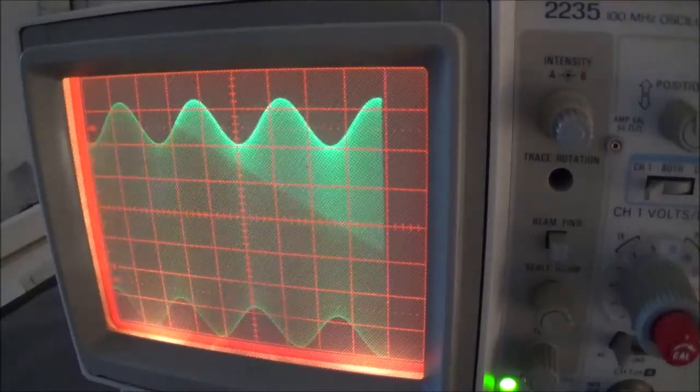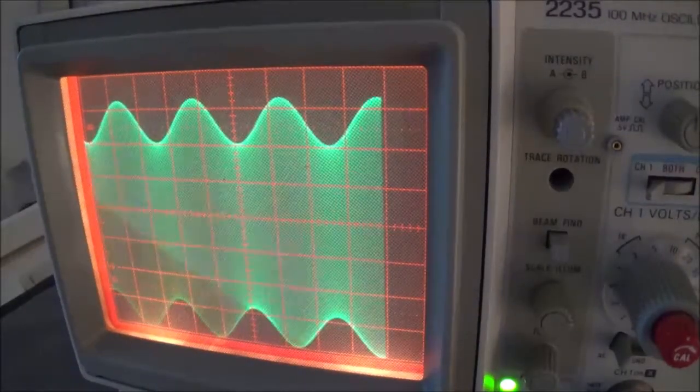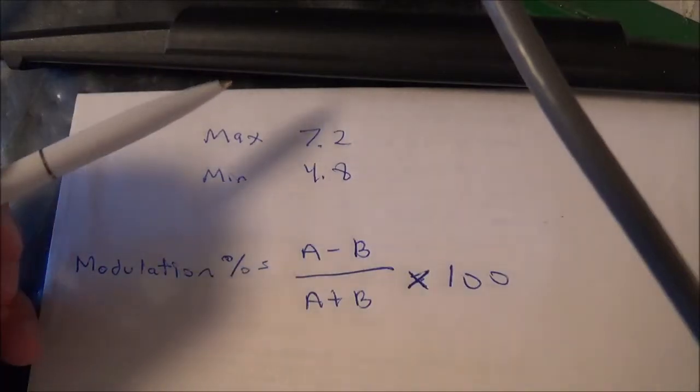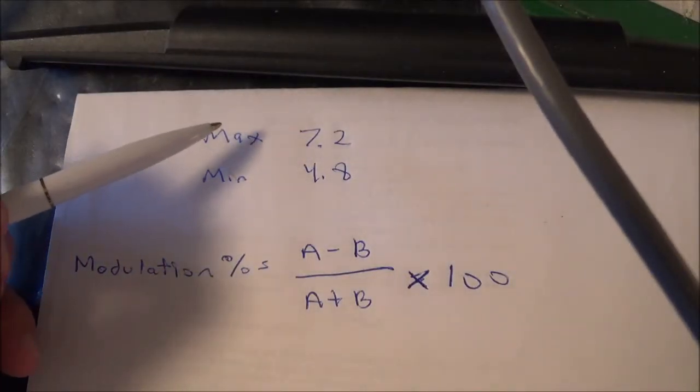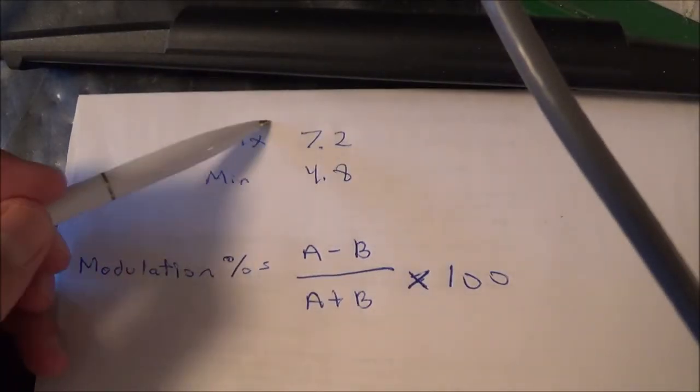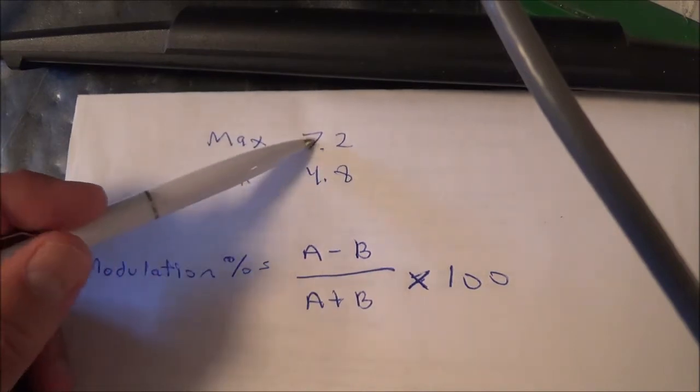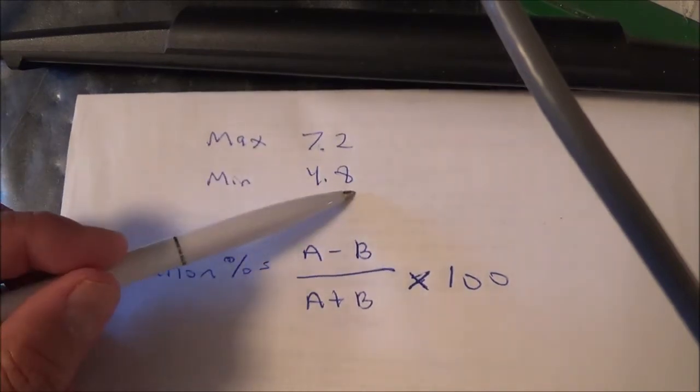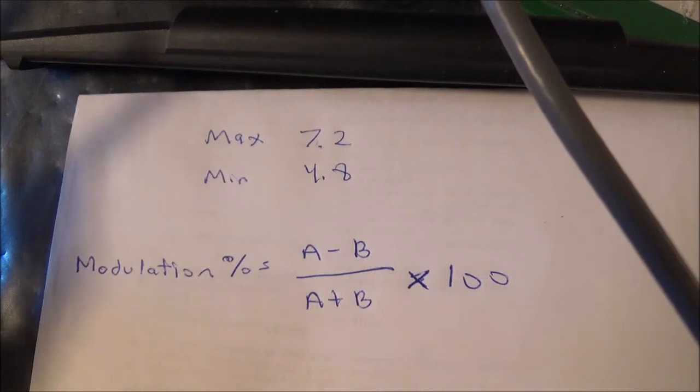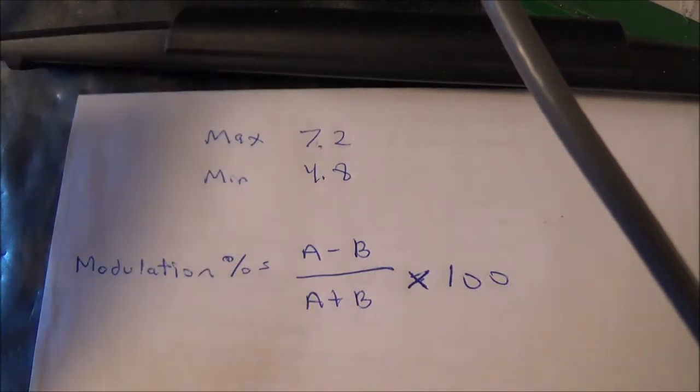Let me get myself a pen. So I got myself a pen now, which took a little bit. And remember I said the maximum was seven point two, the minimum was four point eight, kind of ballpark figure. This is also going to depend upon how accurately you read your oscilloscope, and you're just trying to get it in the general vicinity. It doesn't have to be spot on.